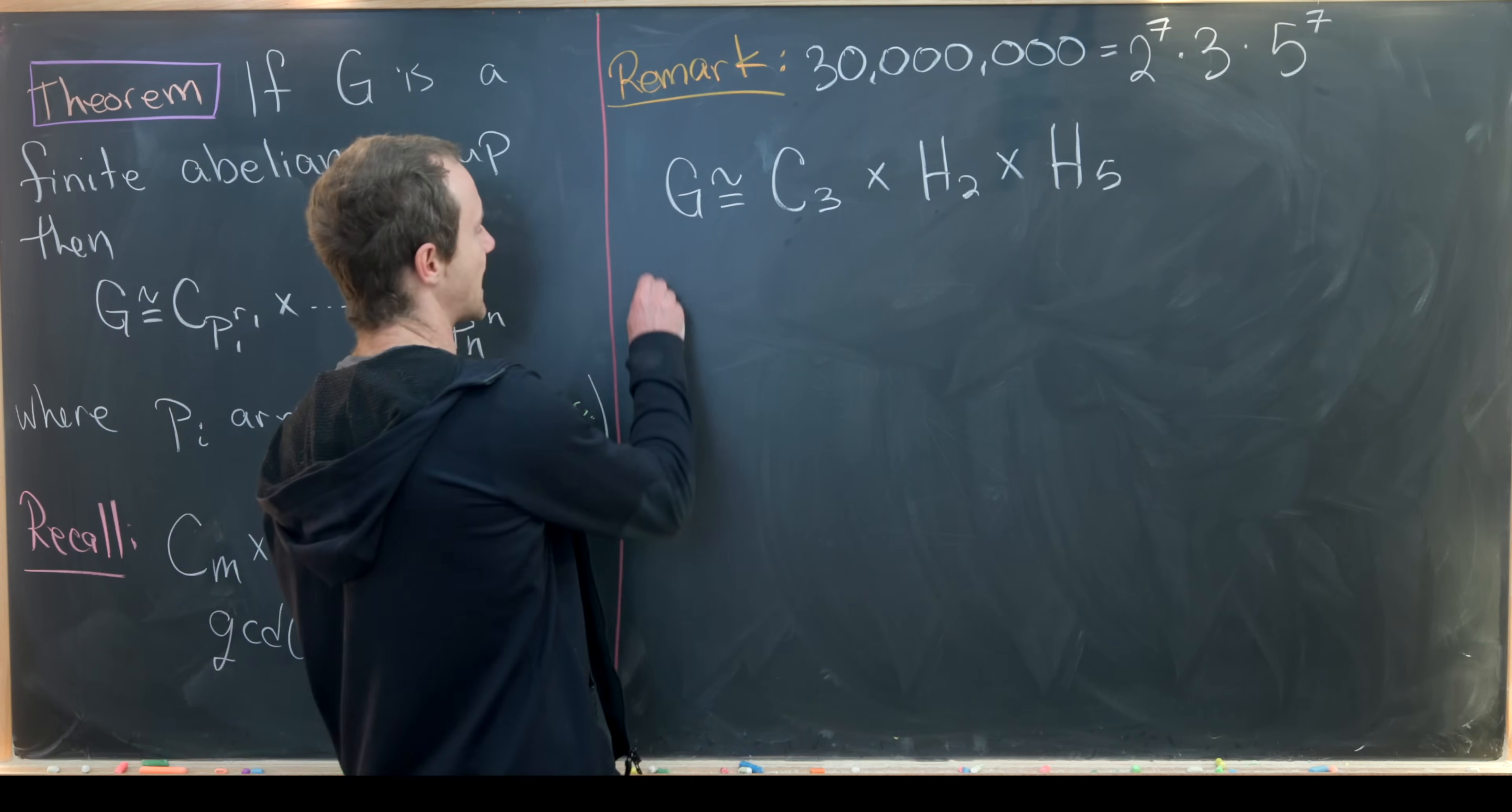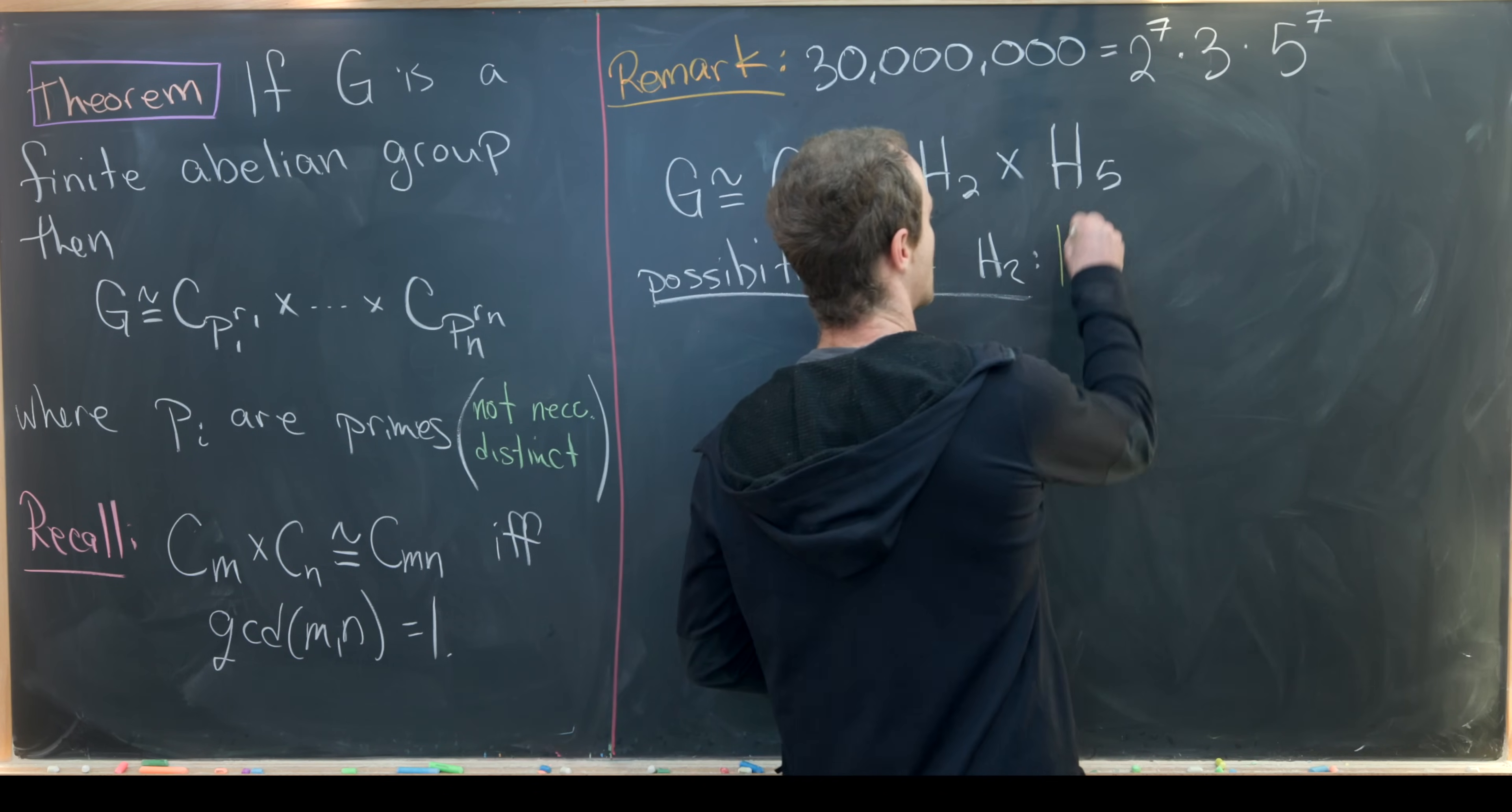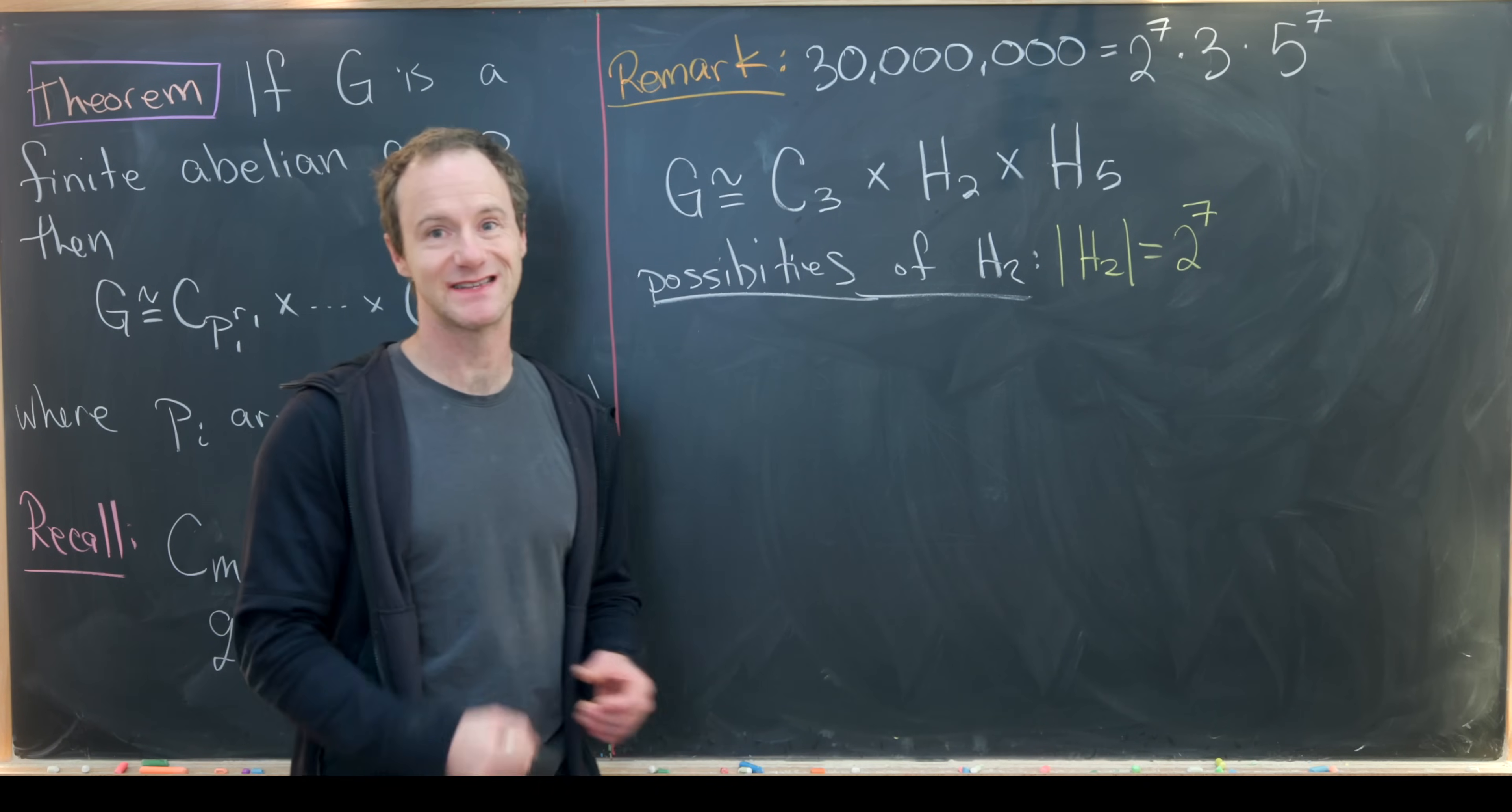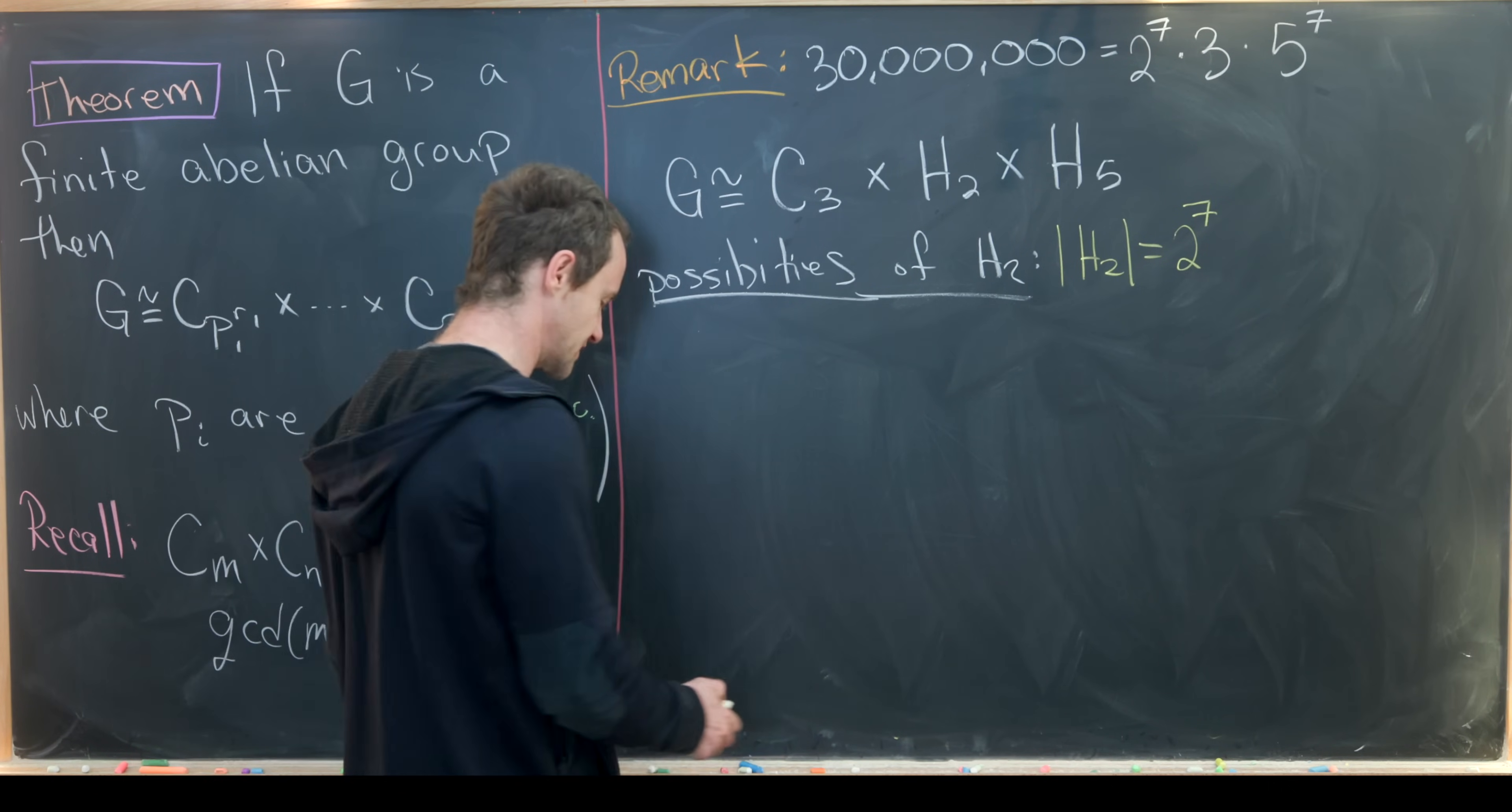So now let's look at the possibilities for H2. The order of H2 should be equal to 2 to the 7th. Well that means we need to split this 2 to the 7th up as many different ways as possible. But that's going to involve writing 7 in as many different sums as possible, and there's an easy way to do that: with partitions.